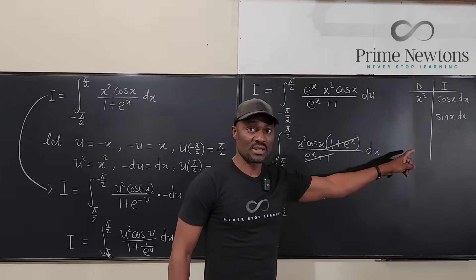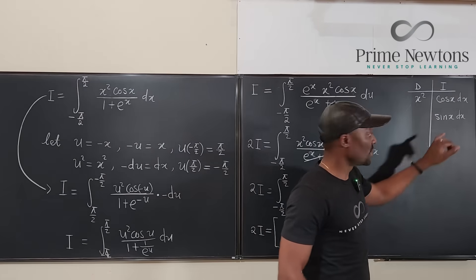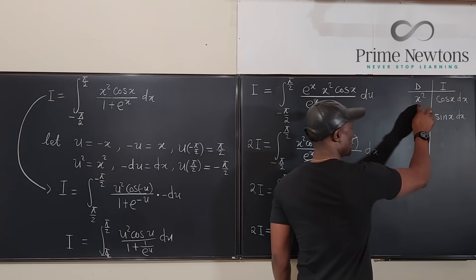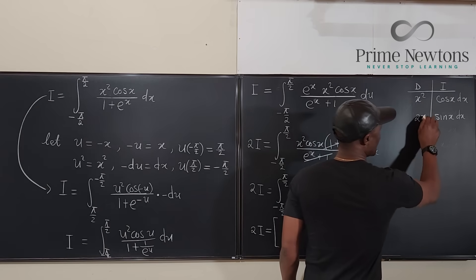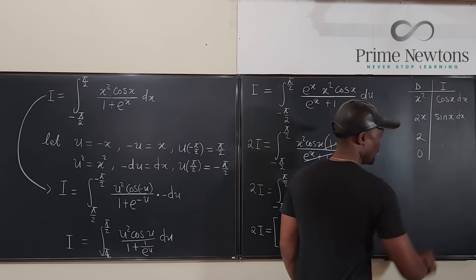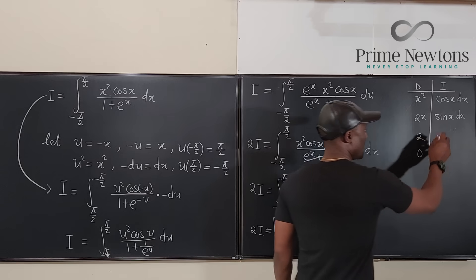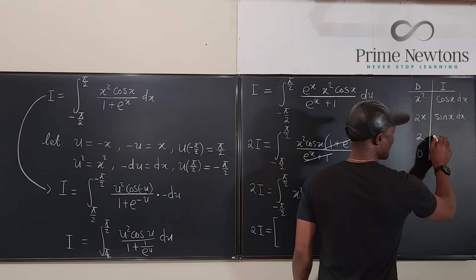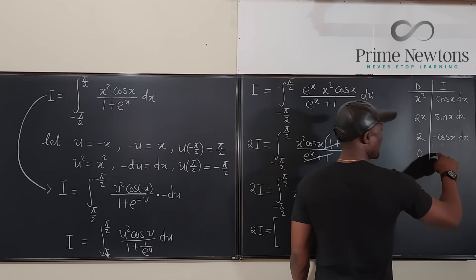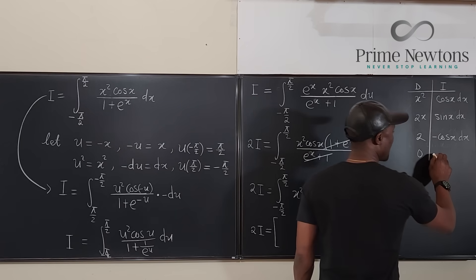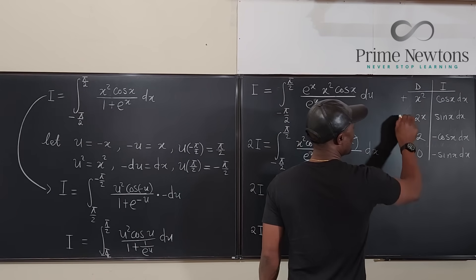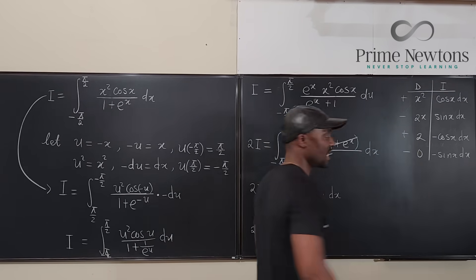Well let's do this side so we know how many times we need to integrate. If you differentiate x squared you get 2x. Differentiate 2x you get 2. Differentiate 2 you get zero. You stop at zero if you're dealing with a polynomial. If we integrate sine x we're going to get negative cosine x. If we integrate negative cosine x we're going to get negative sine x. So what we have, you put plus minus plus, you just put alternate signs.